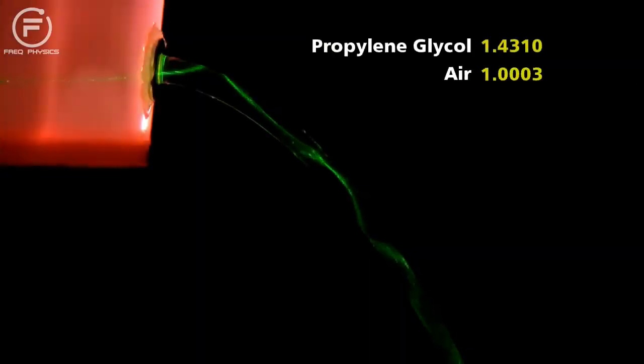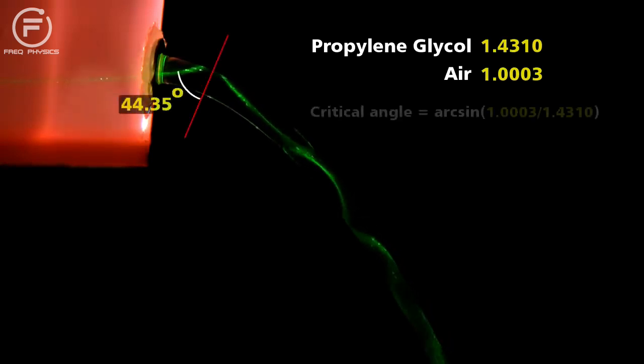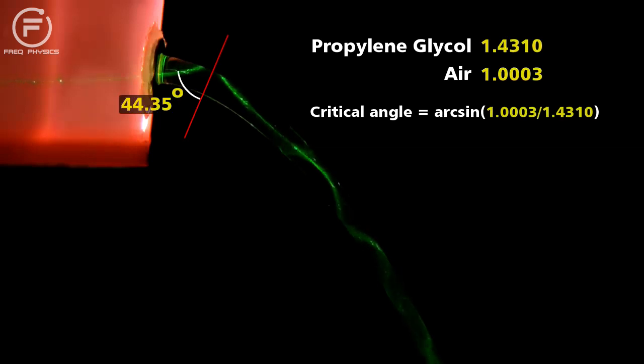For this propylene glycol and air system, as long as a beam hits the surface at an angle greater than 44.35 degrees, measured from the normal, it will propagate down the stream via total internal reflection. To create this same effect in an optical fiber,